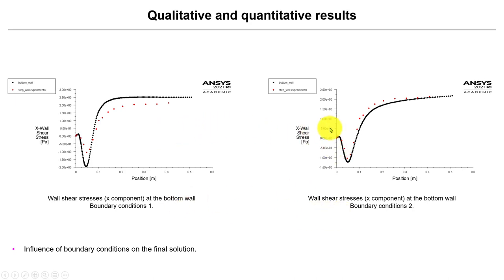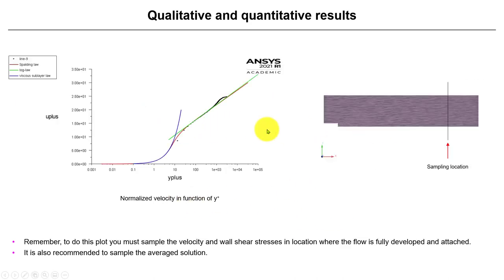We do the classical plot - the law of the wall. Remember you can do this in any case, the only requirement is that where you sample, the flow must be fully developed, and ideally should not have been in a recirculation area, otherwise this profile will separate.